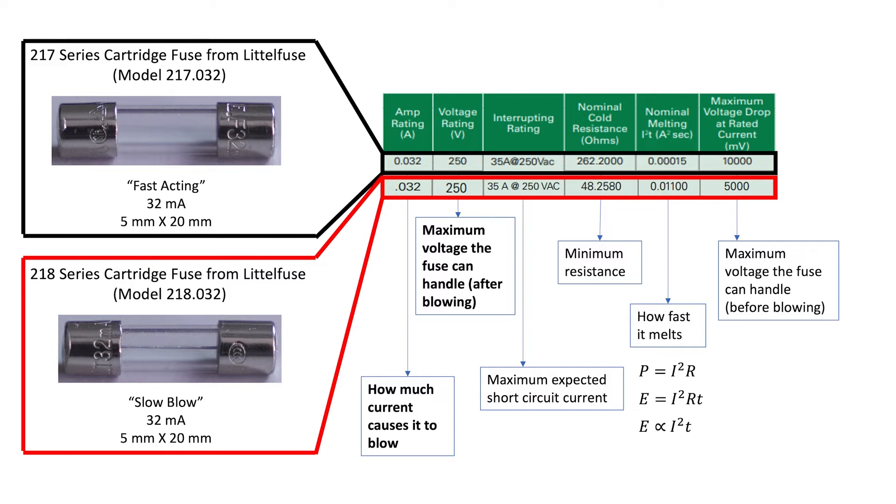Let's look at the parameters for the model 218 fuse from LittleFuse, which is also a 32 milliamp fuse. Both of these fuses have the same current rating, the same voltage rating, the same interrupting rating. They have a slight difference in resistance and a slight difference in the maximum voltage drop, but we're not going to worry about those.